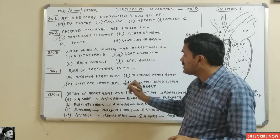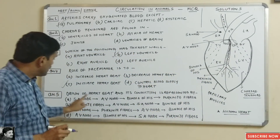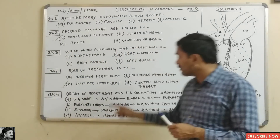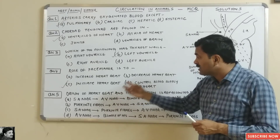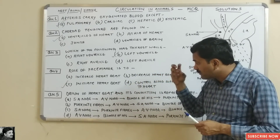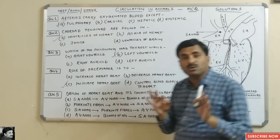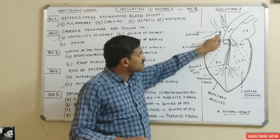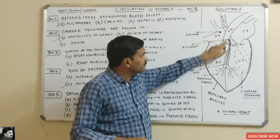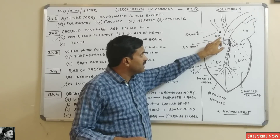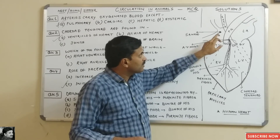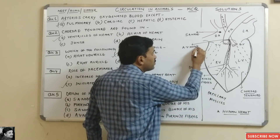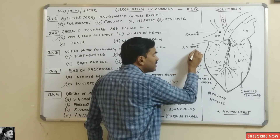Question five: the origin of the heartbeat and its conduction is represented by? The impulses first travel from the SA node — present in the right auricle — to the AV node, also called the auriculoventricular node. The SA node is the pacemaker, and the AV node is called the pace setter of the heart.